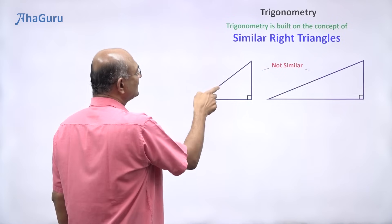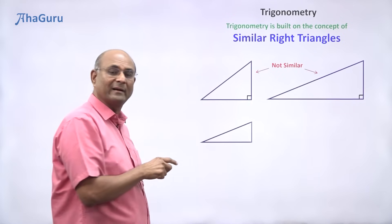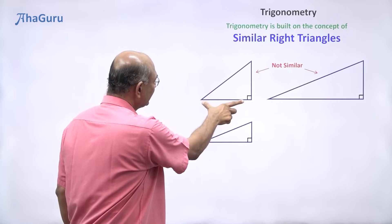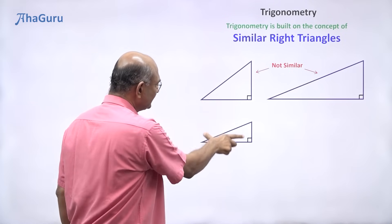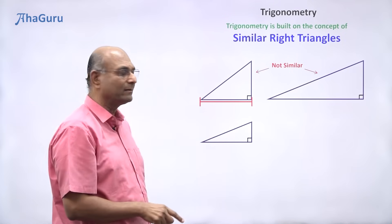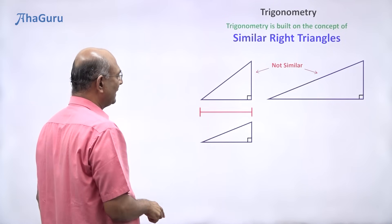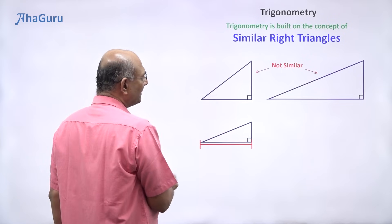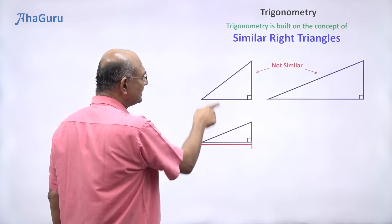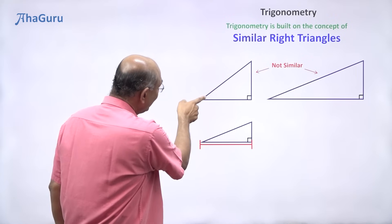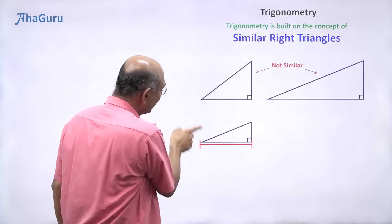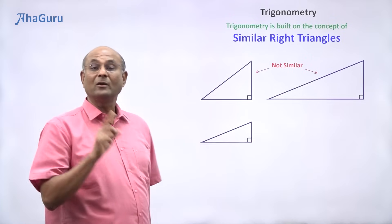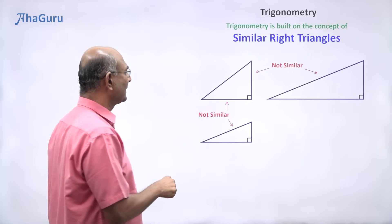Suppose I now draw another triangle. Here this side is equal to this side — you can see that if I just bring it down. But that doesn't mean that these two are similar. In fact, just by looking at it, you can see that this angle is bigger than this. So these two are not similar.